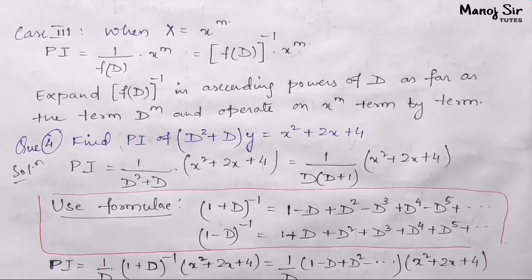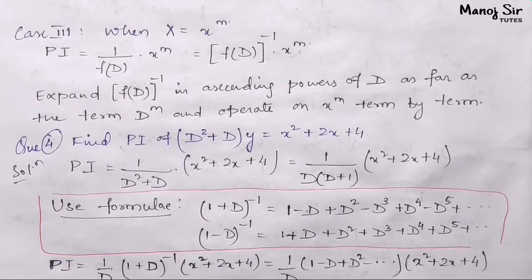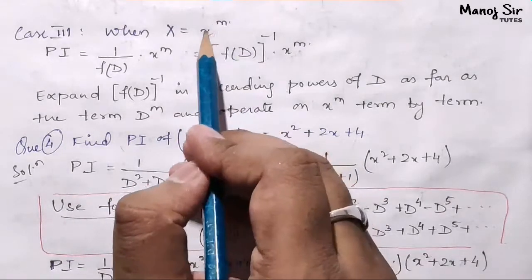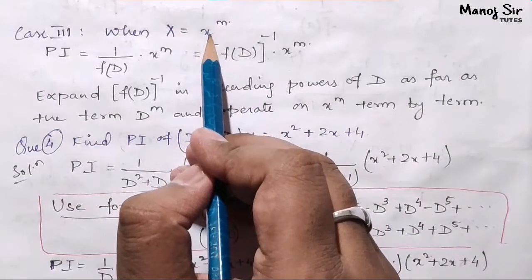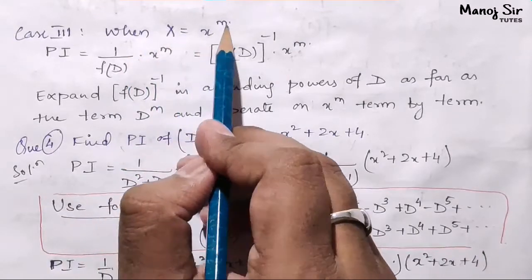Hey guys, in this video we are going to see the third case of rules for finding the particular integral. In the first case we saw the exponential form, in the second case the trigonometric form, and in the third case we are going to see the algebraic form. So when x equals x to the power n, this is the algebraic form.